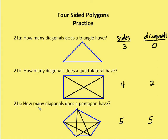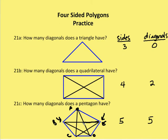How many diagonals does a pentagon have? In a pentagon, each vertex has two non-consecutive vertices it can connect to, giving two diagonals per vertex. Counting two diagonals at each of the five vertices — A, B, C, D, and E — gives ten, but we only have five diagonals total. This is because each diagonal is counted twice: once from E to B, and once from B to E. So we divide by two to correct for that double counting.